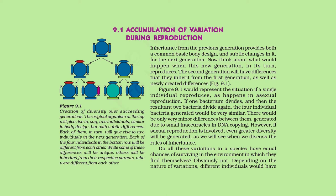9.1 Accumulation of variation during reproduction. Inheritance from the previous generation provides both a common basic body design and subtle changes for the next generation. The second generation will have differences inherited from the first generation as well as newly created differences. If one bacterium divides, the resultant two bacteria divide again, and the four individual bacteria generated would be very similar, with only very minor differences due to small inaccuracies in DNA copying.